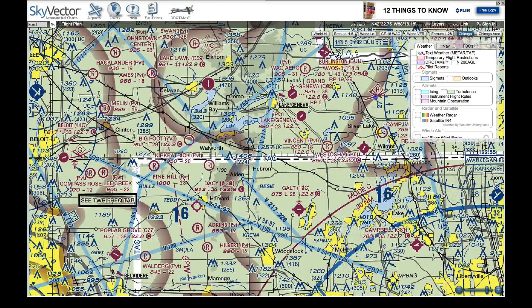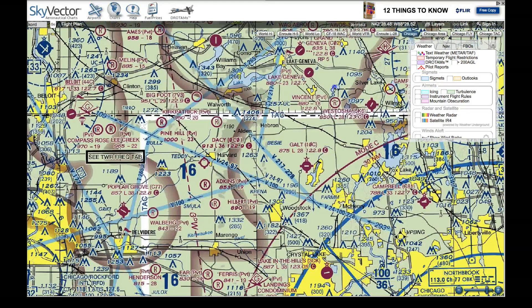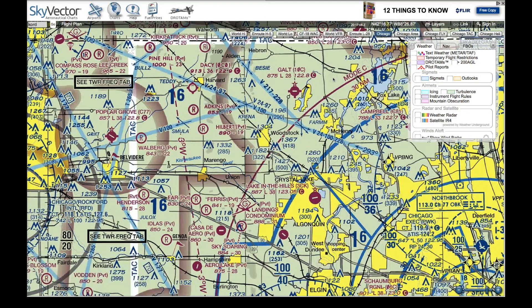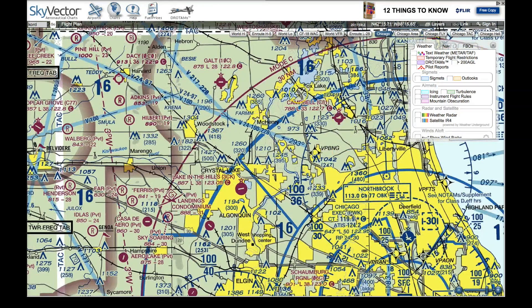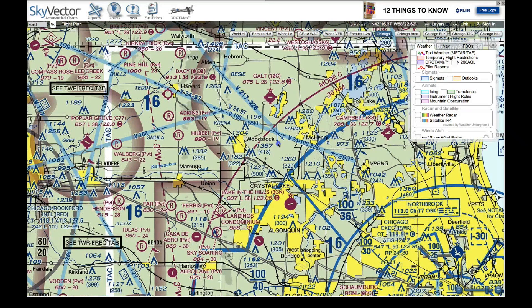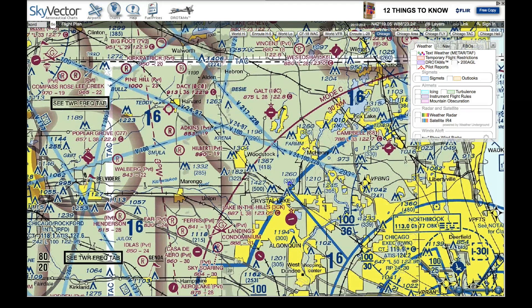Let's get back to looking at common symbols. We covered airports: magenta is non-towered and blue airports are towered. So what other information can we get off the sectional chart?